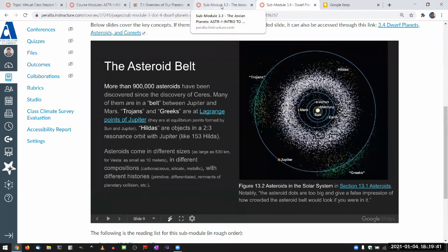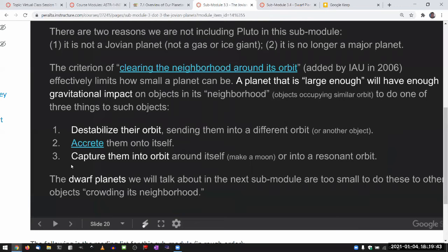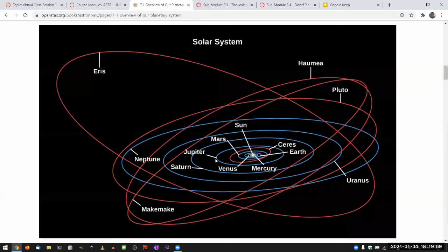And that only stable arrangement that's possible is either being captured into Jupiter, or into orbit around it, or being in a resonant orbit. It's called like Lagrange point, but let me not go into that. And something like that happens with all these major planets, Jupiter, Saturn, Uranus, and Neptune.